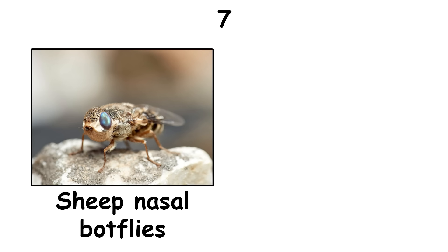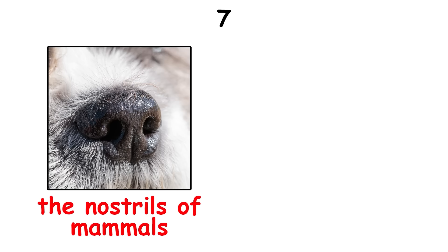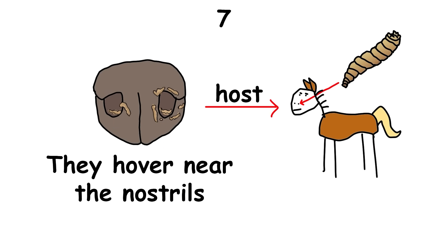It's rare, but a species called sheep nasal botflies can deposit larvae directly into the nostrils of mammals, humans included. They hover near the nostrils of their host and spray live larvae into the nose, where they develop before exiting.